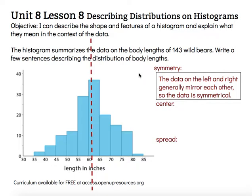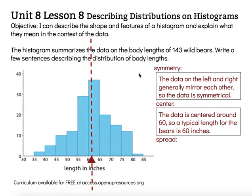With the center, we're looking at that balance point, and it helped to consider the symmetry first because we established what that center of the data might be. I'm going to go ahead and put that little fulcrum, that little triangle, at that center mark so that we can see where the center or the balance point is for that data. The data is centered around 60, somewhere maybe a little bit above 60, so the typical length for the bears is about 60 inches long.